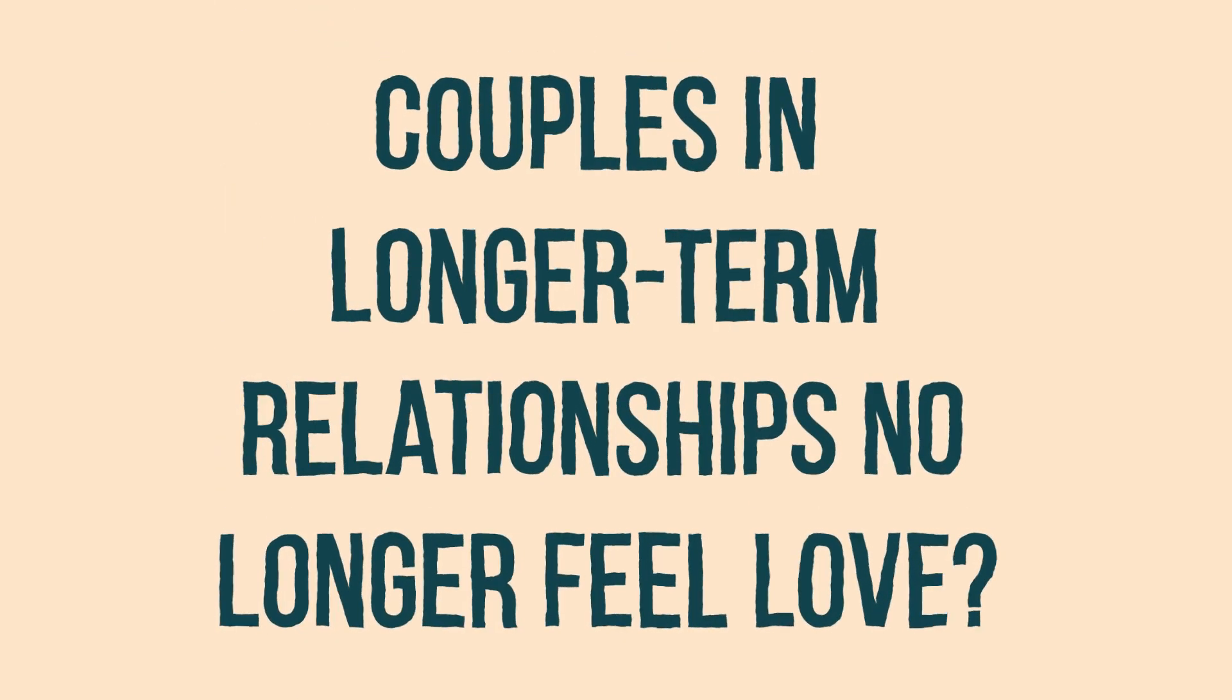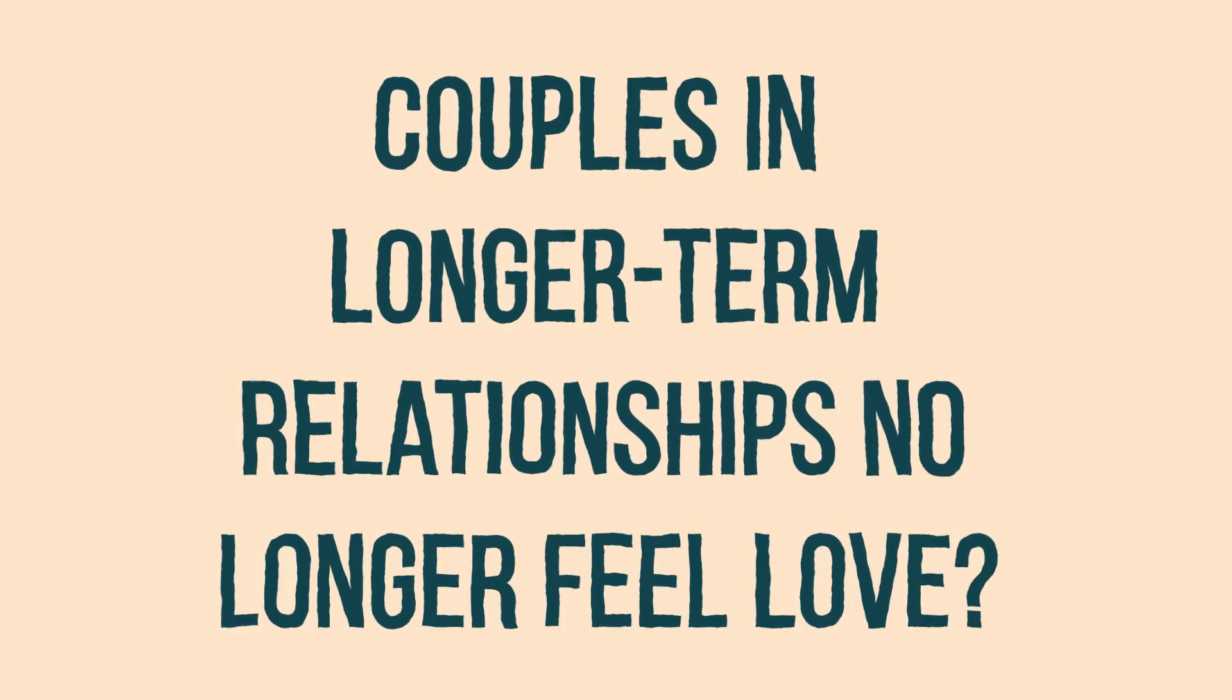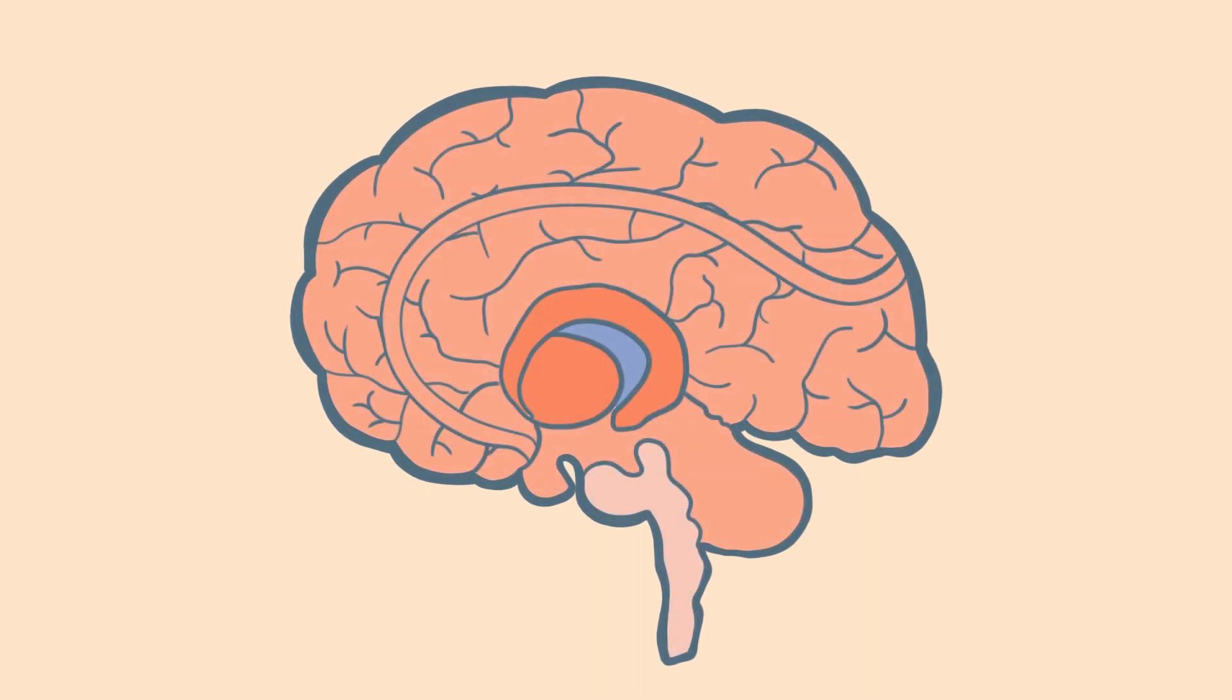Does that mean that couples in longer-term relationships no longer feel love? Not quite. Love remains, but with a different brain mapping. Studies carried out on participants that had been in longer-term relationships, using the same format of observing MRI while the participants viewed photos of their beloved, showed higher activities in the brain's basal ganglia. This area is heavily involved in forming attachments.